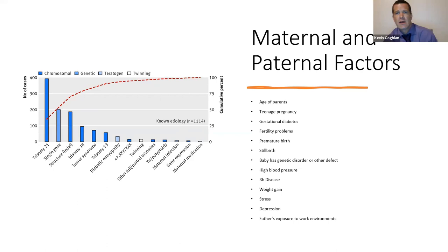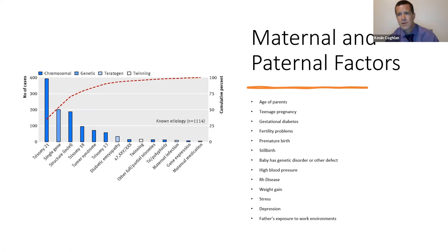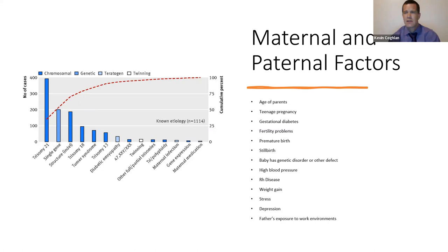Gestational diabetes, health concerns, fertility problems, premature birth, stillborns, genetic disorders or other defects, and high blood pressure are all threats to babies. RH disease and weight gain — or not gaining enough weight — during pregnancy can have a huge effect, because fat is important in the right amount. Stress can affect the mother and baby. Depression as well. Father's exposure to work environments can even be passed down to kids. There's just so many different things to consider.